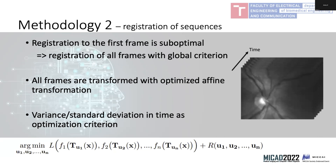The main disadvantage of standard registration techniques is the need to select a reference image and a moving image, then transform the moving image to the reference image, making the solution suboptimal. It would be better to optimize the problem globally and get an optimal solution. This is possible using auto-differentiation, where we can optimize a global similarity criterion and transform all images together in one optimization step.